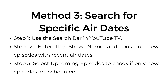Method number three: search for specific air dates. Step one, use the search bar in YouTube TV. Step two, enter the show name and look for new episodes with recent air dates. Step three, select upcoming episodes to check if only new episodes are scheduled.